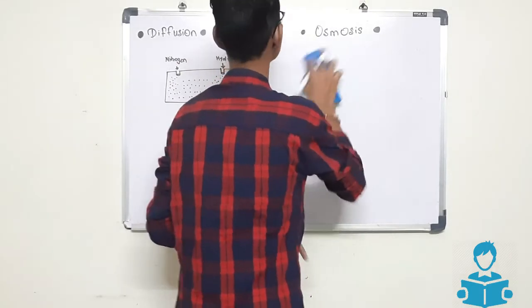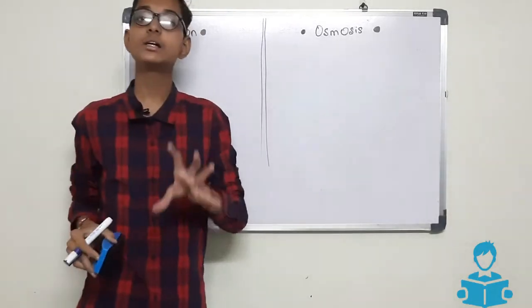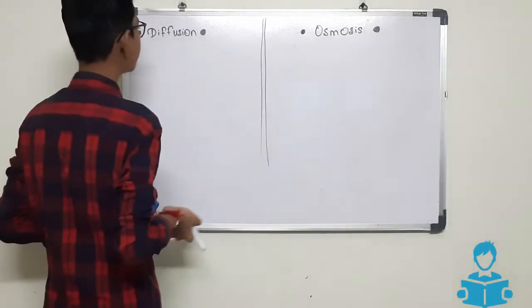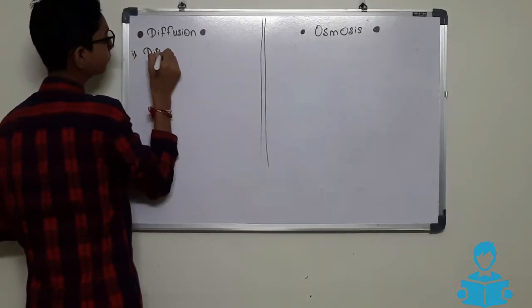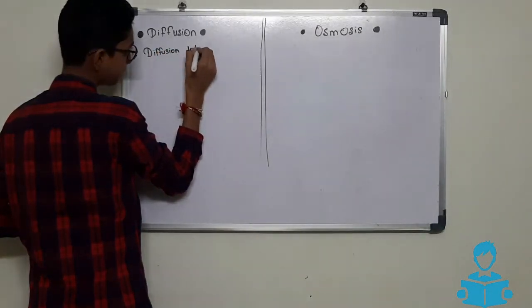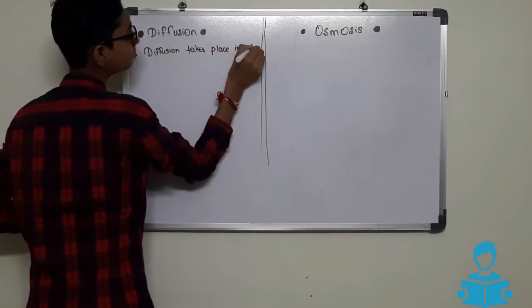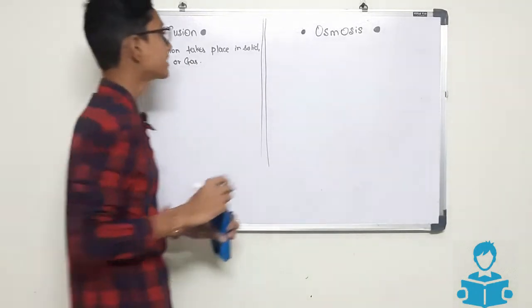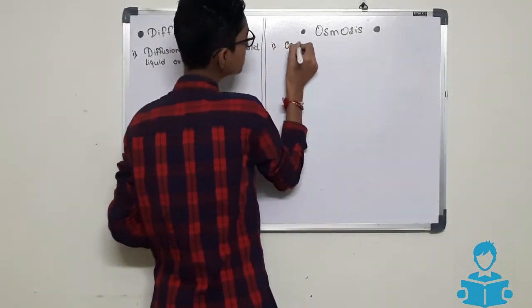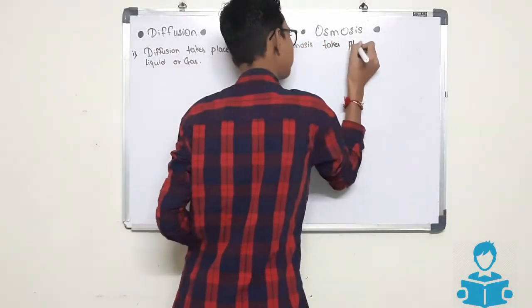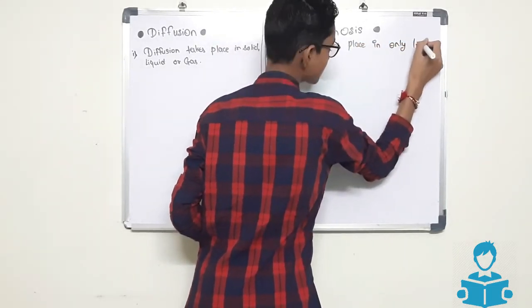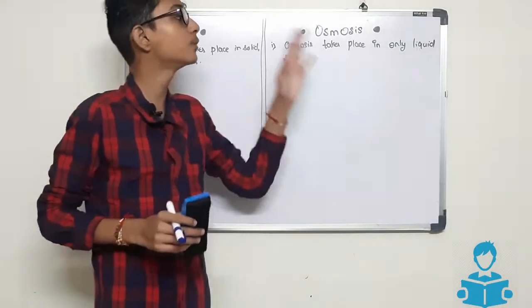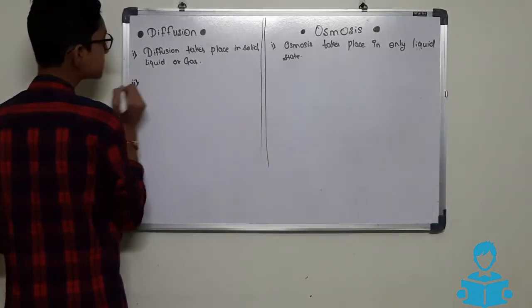Now we will learn about some differences between diffusion and osmosis. The first difference is that diffusion takes place in solid, liquid, or gas — all three states. Osmosis, on the other hand, takes place only in the liquid state. You can say that osmosis is the diffusion of the liquid state.